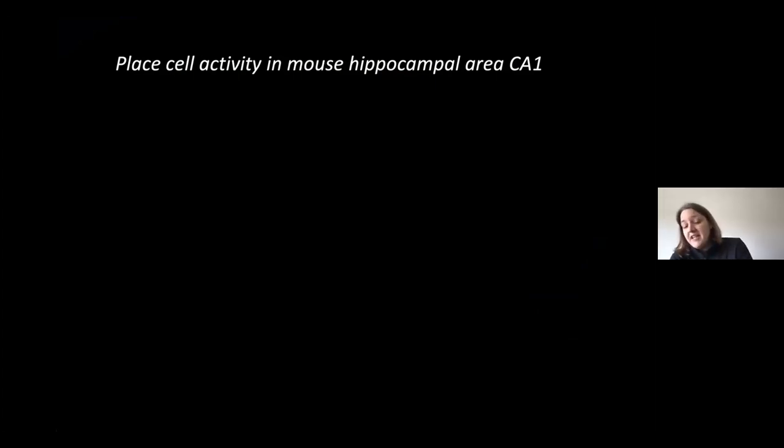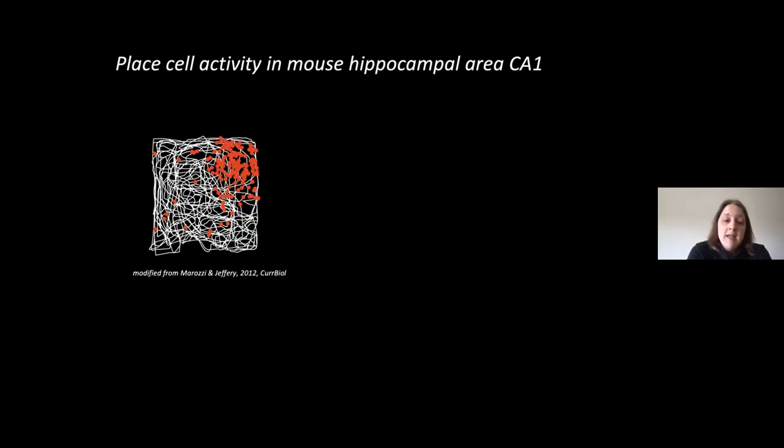Place cells were discovered by John O'Keefe and colleagues about 50 years ago. These are neurons that fire action potentials specifically when the animal is in a particular location of its environment. Each red dot corresponds to an action potential and the white line corresponds to the trajectory of the animal. You see that this neuron fired action potentials specifically when the animal was in the upper corner. In any given environment, about 25 to 50% of CA1 cells will be place cells. Their firing fields, or place fields, are distributed throughout the entire environment, suggesting that as a population, these cells form a spatial map and inform spatial navigation.